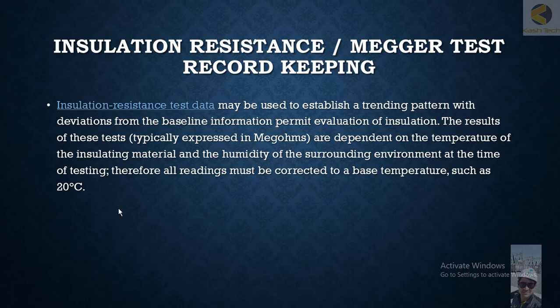It is most important that whatever reading you are getting, you should convert it to 20 degrees centigrade each time, so you can compare values year over year, because the reading is affected by temperature. If you are not using the correction factor or multiplying factor, you will not be able to analyze the pattern of insulation — whether it is going down or not — and the readings will be quite random.